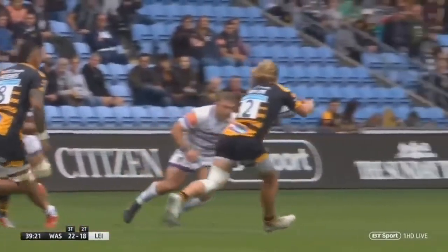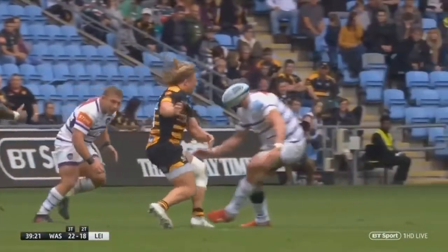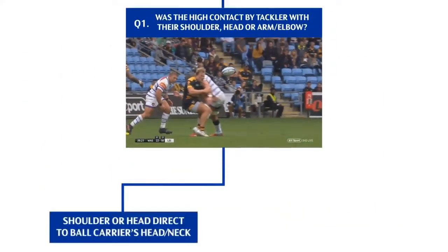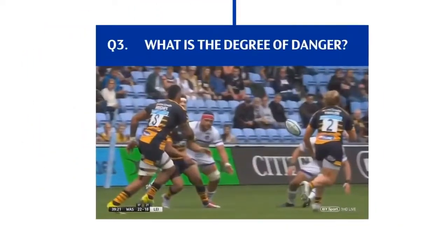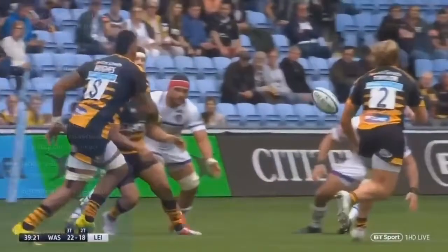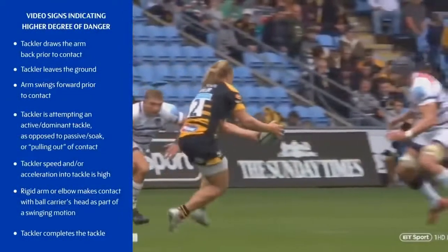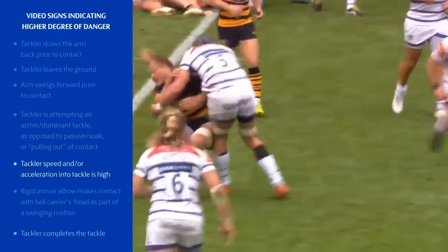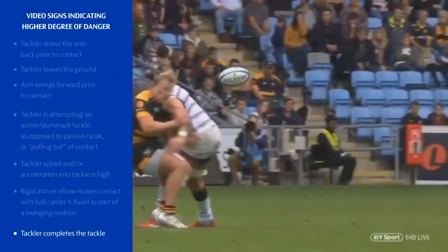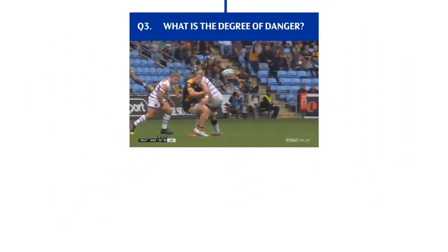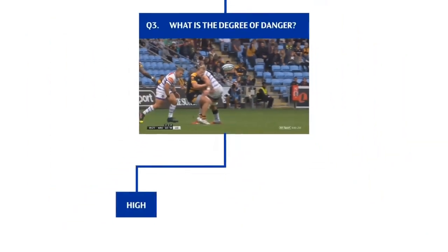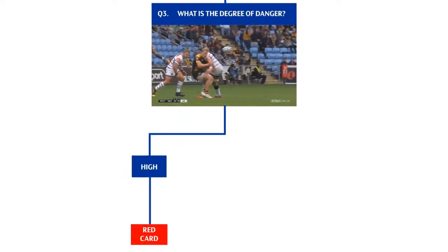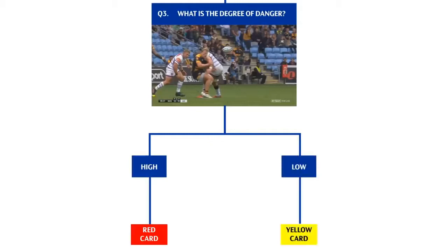In this example, there is direct contact to the tackled player's head from the shoulder of the tackler. The match officials then ask: what is the degree of danger? In this tackle, the degree of danger is high, indicated by a dominant tackle attempt, the tackler accelerating into contact, and the tackler completing the tackle. For a high degree of danger, the initial decision would be a red card. If the officials deem the degree of danger to be low, the initial decision would be a yellow card.